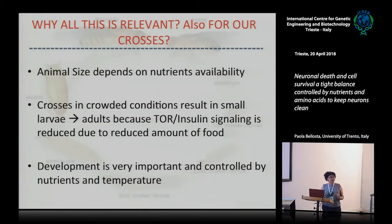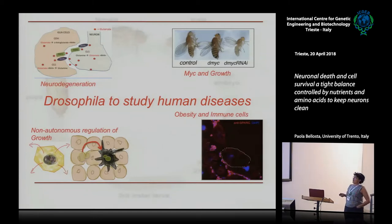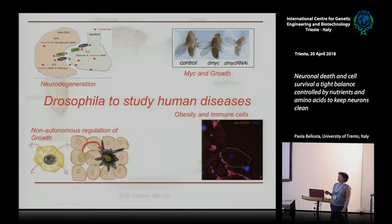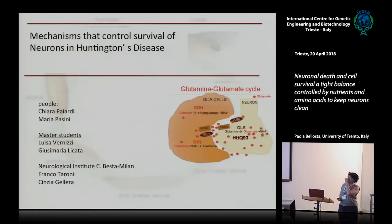After saying that, I'll start with the project. As I said, I started with Myc and growth, and that is still my primary project. However, over time we also developed another project — to understand how Myc can regulate non-autonomously — and another project through obesity and immune cells. But today I want to concentrate on talking about this little project about neuronal degeneration — mainly about the function of GS1 and glutamine catabolism in Huntington's disease.